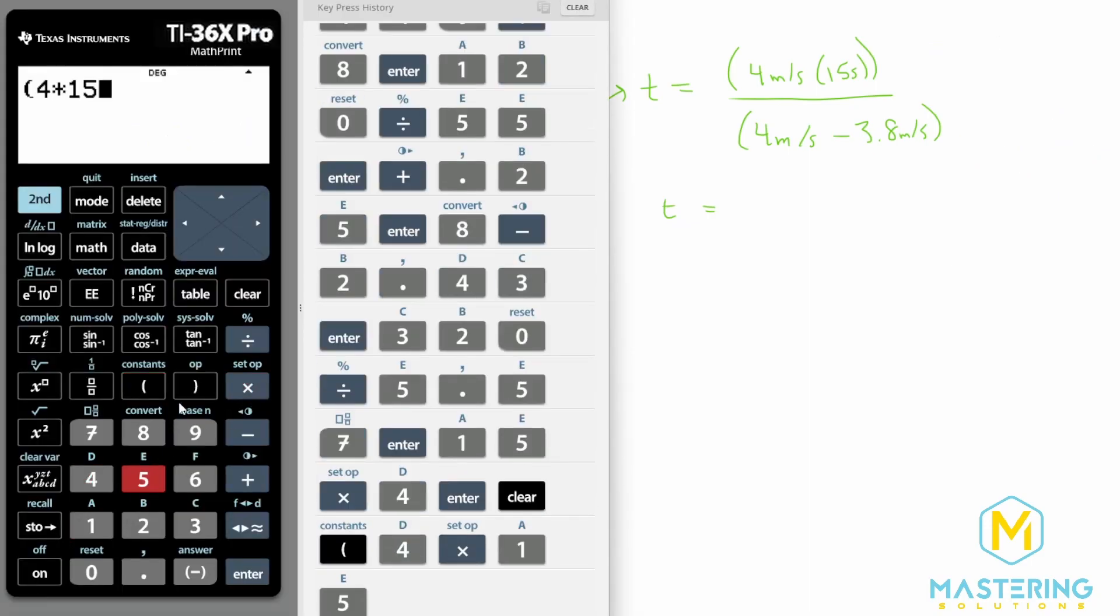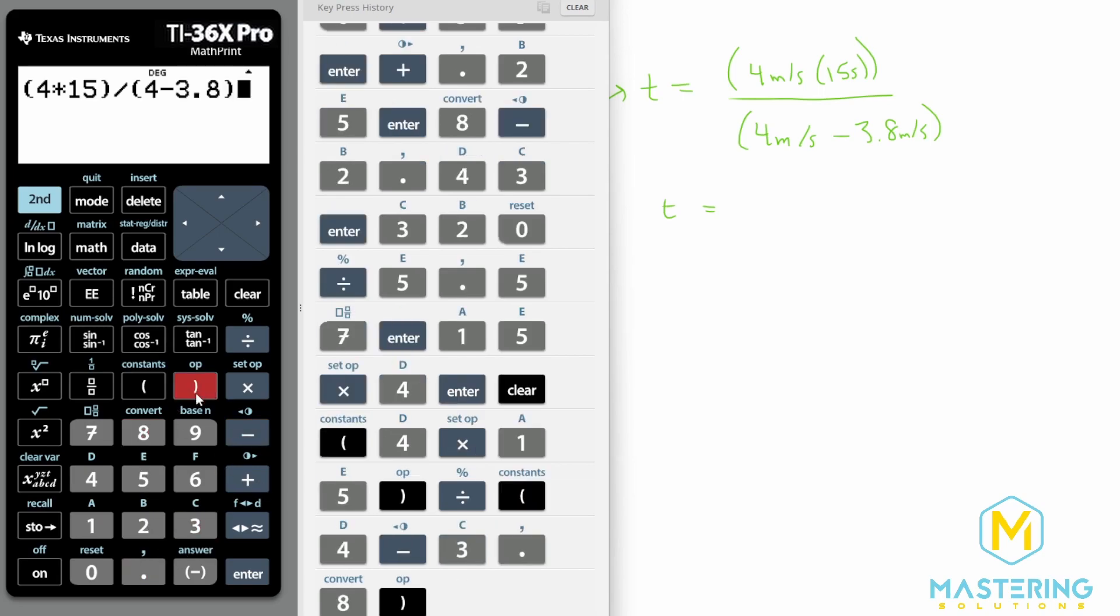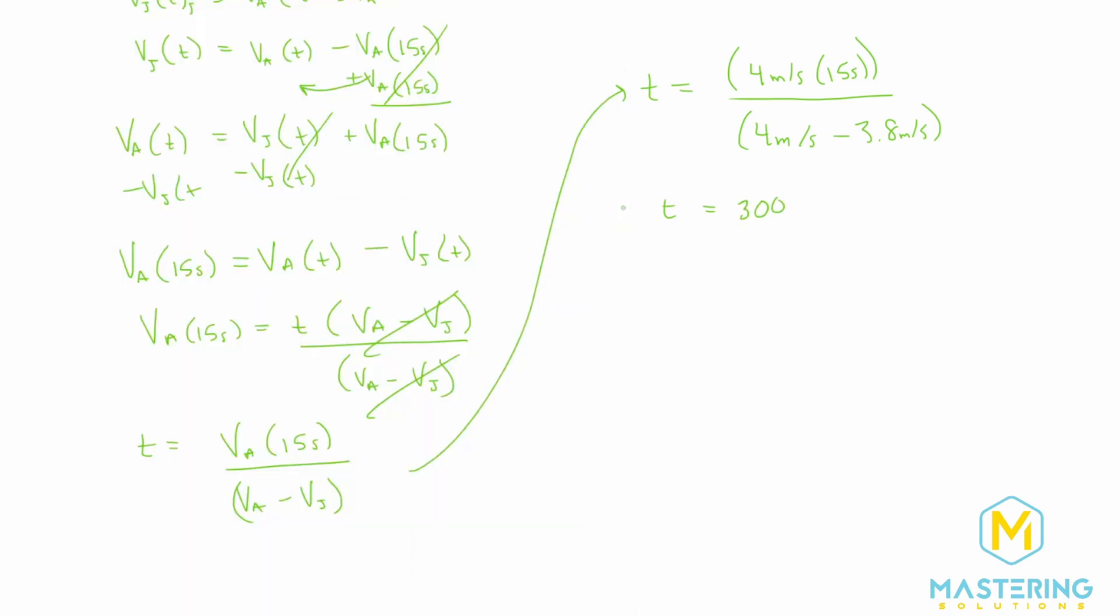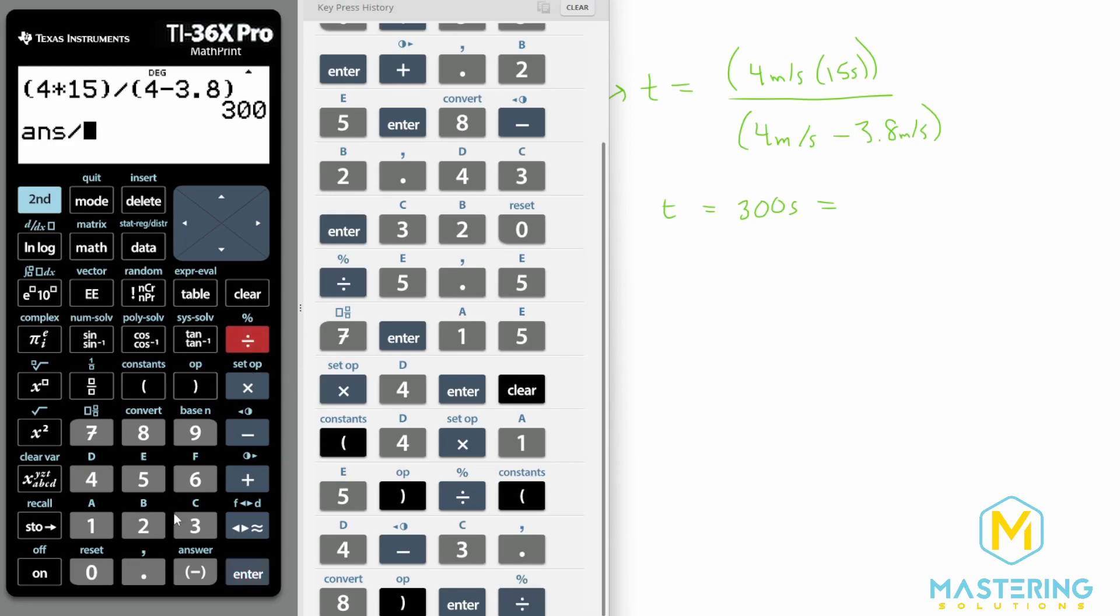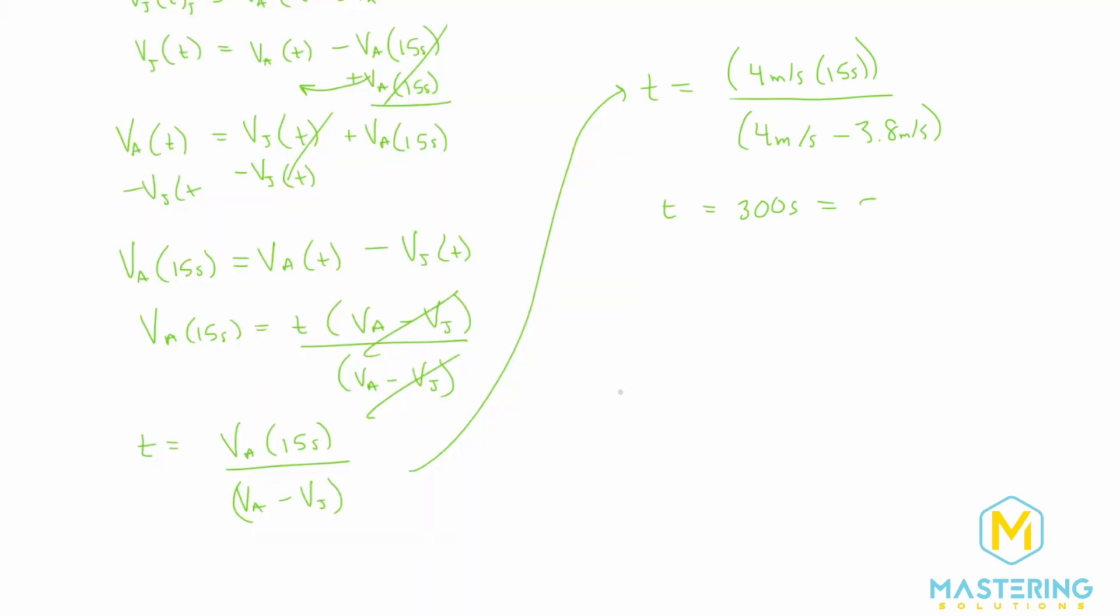We have four times 15, and then we're going to divide that by four minus 3.8. That gives us 300 seconds, but we want it in minutes. 300 seconds divided by 60 to put us into minutes will give us five minutes.